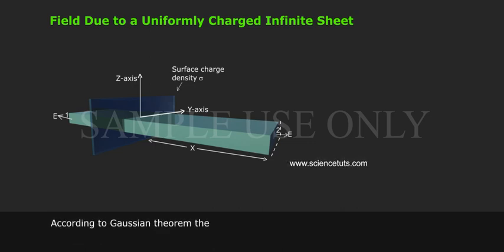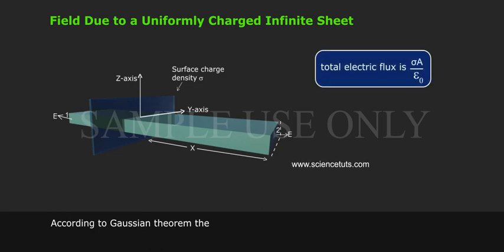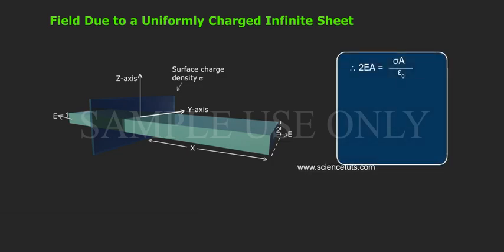According to Gauss's theorem, the total electric flux is σA/ε₀. Therefore, 2EA = σA/ε₀. E = σA/(2Aε₀).